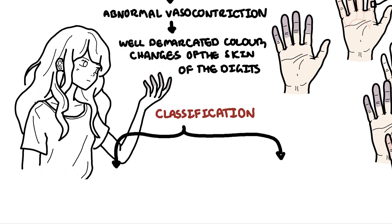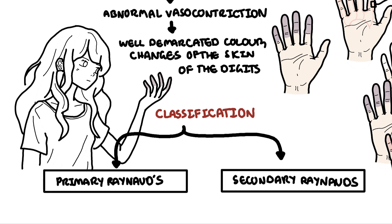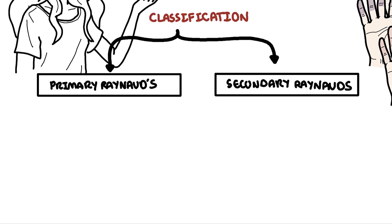There are two main types of classifications: primary Raynaud's phenomenon and secondary Raynaud's phenomenon. Primary Raynaud's phenomenon, also known as Raynaud's disease, is the most common.